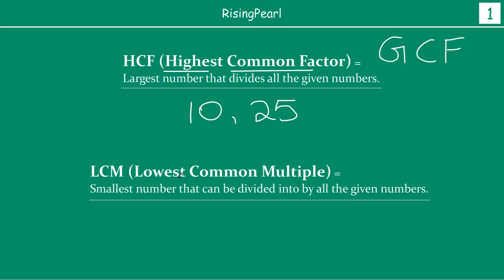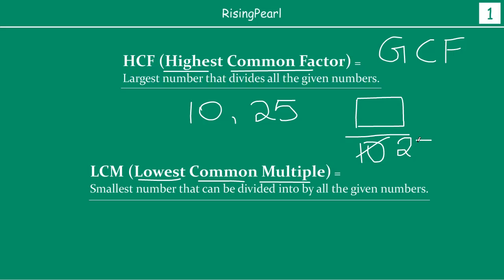LCM is nothing but Lowest Common Multiple — the smallest number that can be divided by all the given numbers. If I have to find the LCM of 10 and 25, I'm looking for a number such that if I divide it by 10, the remainder is 0, and if I divide it by 25, the remainder is also 0. The smallest such number is what we mean by LCM.